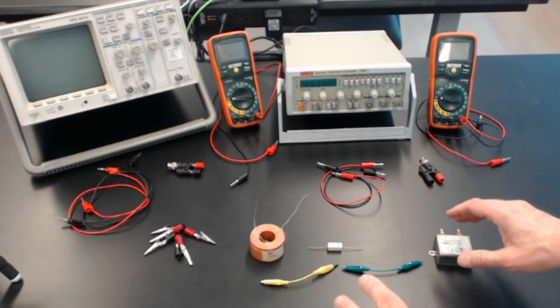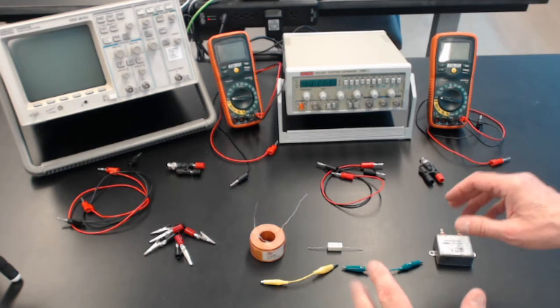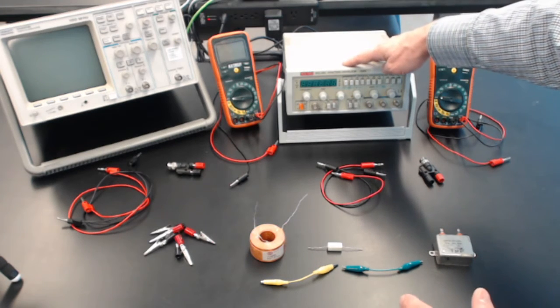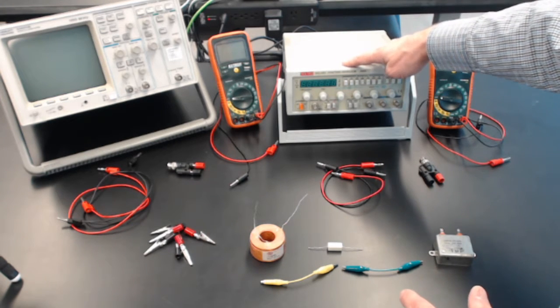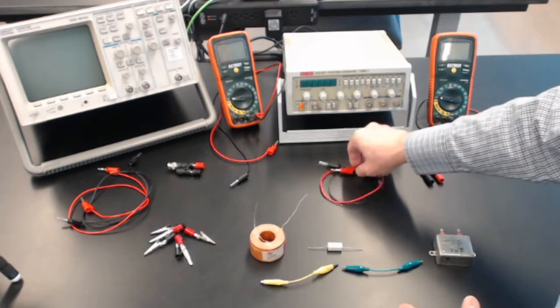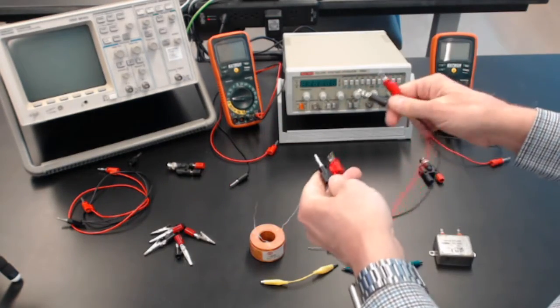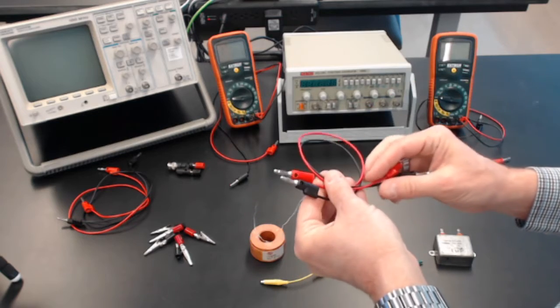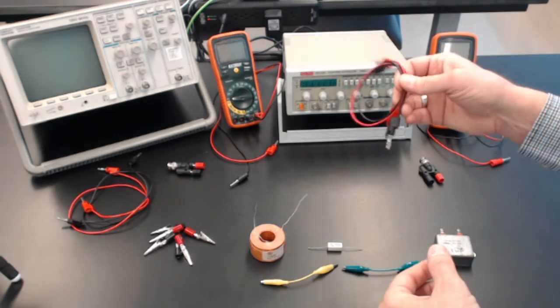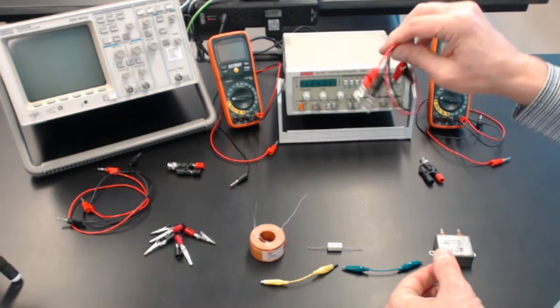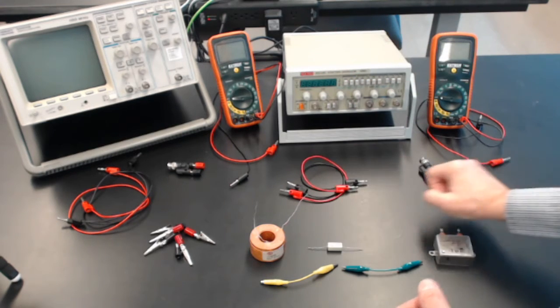Now, we'll connect this in series with a source of oscillating signal. That comes from this function generator. I'll show you how to operate it in a little bit. I've got two one-foot-long wires to connect that. They're red and black, but it doesn't really matter because we're using AC. We just have red and black usually for positive and negative, but for AC it doesn't matter.